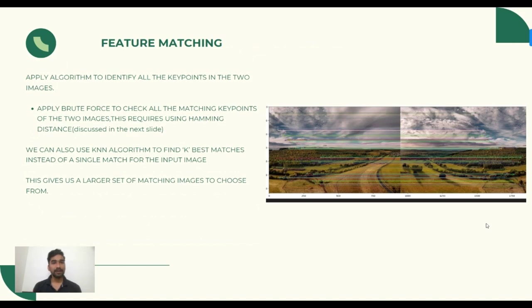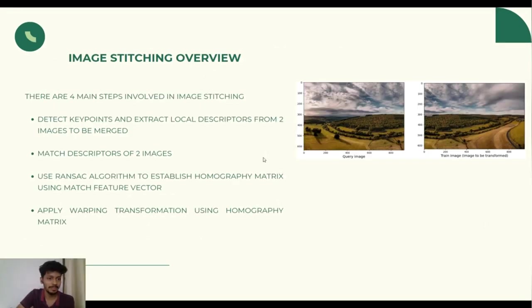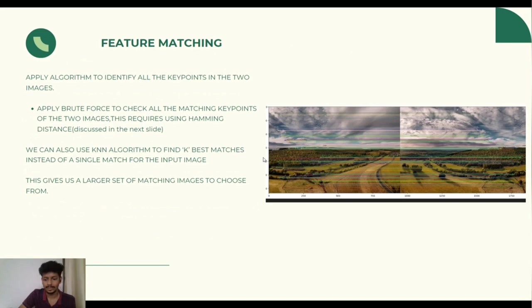For feature matching, we have done with the first main method of detecting key points and describing local descriptors. Now we will come to matching the descriptors of two images. Here we have two methods: brute force and KNN method. Brute force will be a bit slower. Here each descriptor of one image will be matched to all descriptors of the second image. In the first method, matching will give us a single match. But if you are using KNN algorithm, we will get K best matches for each of the descriptors. It gives us a larger set of matching images to choose from, so that will be a better option.